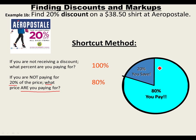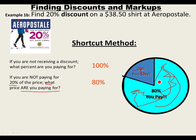If this circle represents your shirt — the entire price — you're paying just for the 80% portion, not the 20%. So if this was a dollar, you're only paying 80 cents. If this was $10, you're only paying $8. If this was $100, you're only paying $80. That's how percents work — it's a ratio that compares a number to 100.